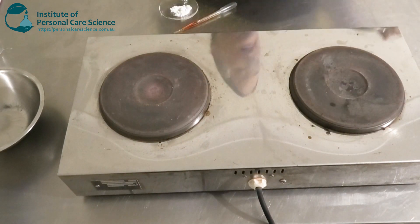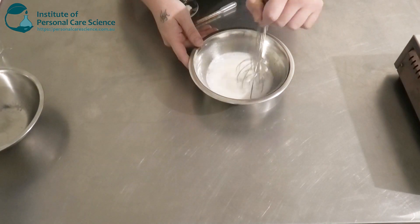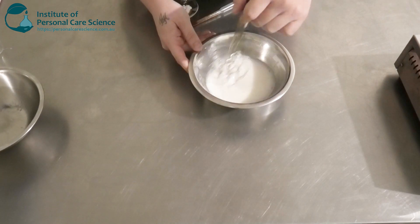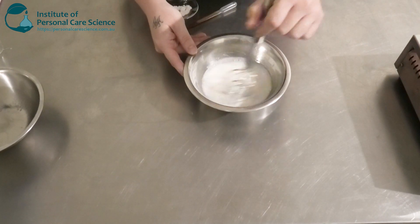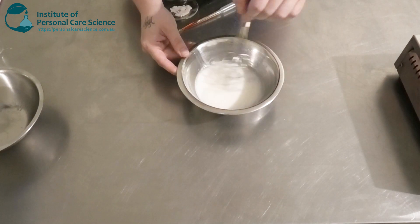Once that's formed, take it off the heat, and then we're going to allow it to cool to below 40 degrees before we add our heat sensitive materials. I'm going to keep stirring until it cools.